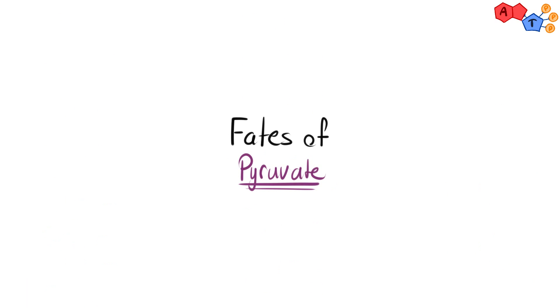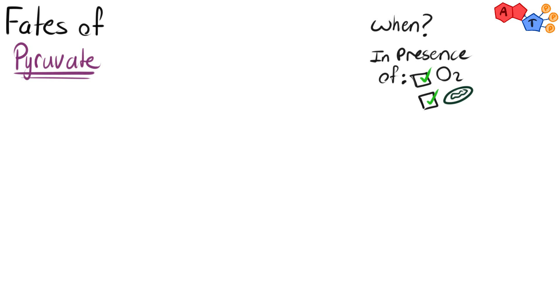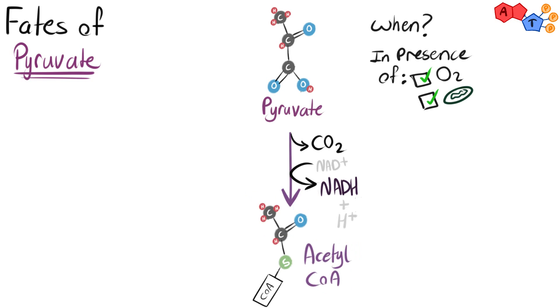At the end of glycolysis, pyruvate has three fates. One, in the presence of oxygen and mitochondria, pyruvate is oxidatively decarboxylated, which means it has lost a carbon molecule in an oxyreduction reaction. This reaction is catalyzed by three enzymes known collectively as pyruvate dehydrogenase complex, yielding acetyl CoA as a final product. Acetyl CoA is the major fuel of Krebs cycle as we'll see in a future video.